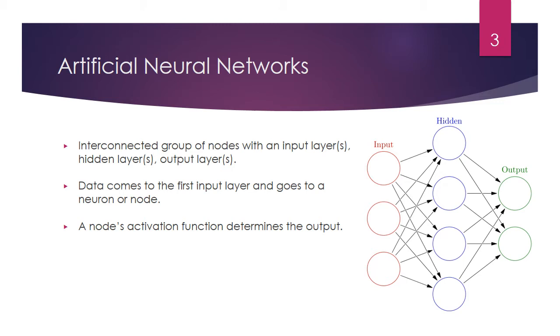Data comes to the first input layer and goes to a neuron, or node, depicted by the circles in the diagram. Given an input, the node's activation function determines the output, or what the network has learned as it goes from the input layer through the hidden layers, to the output layer.